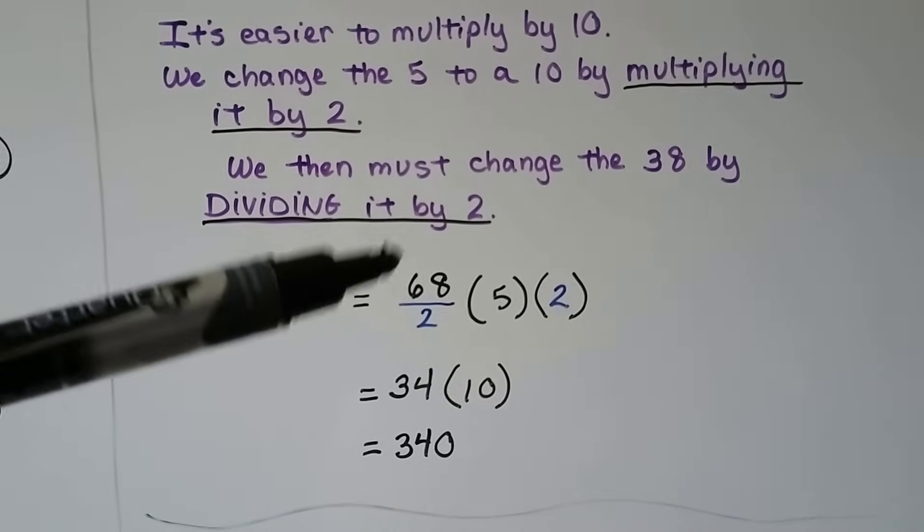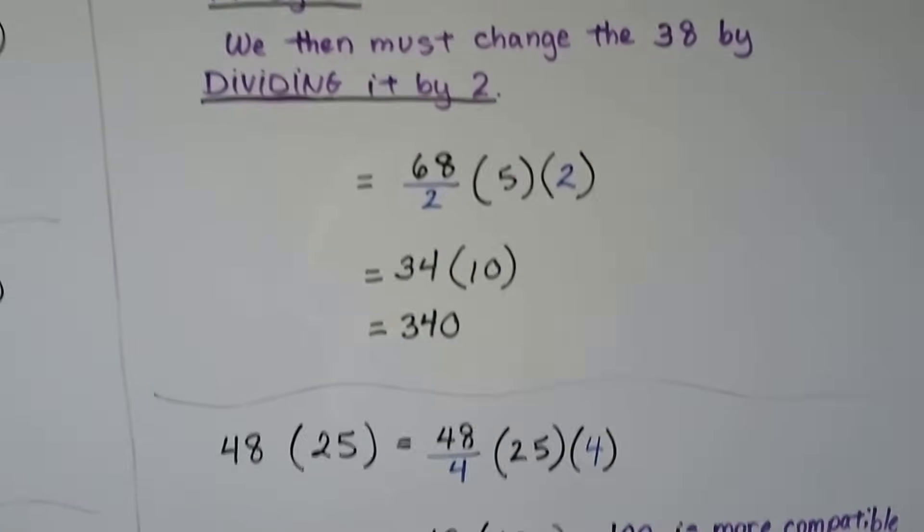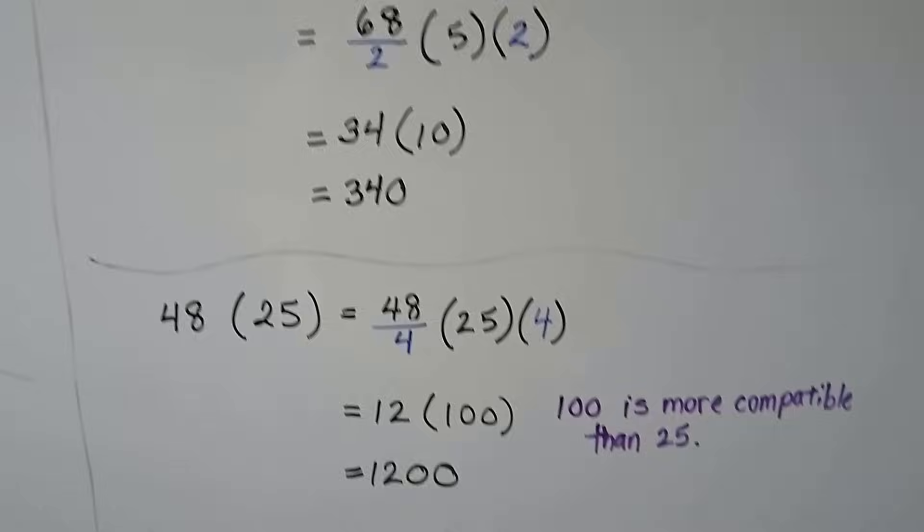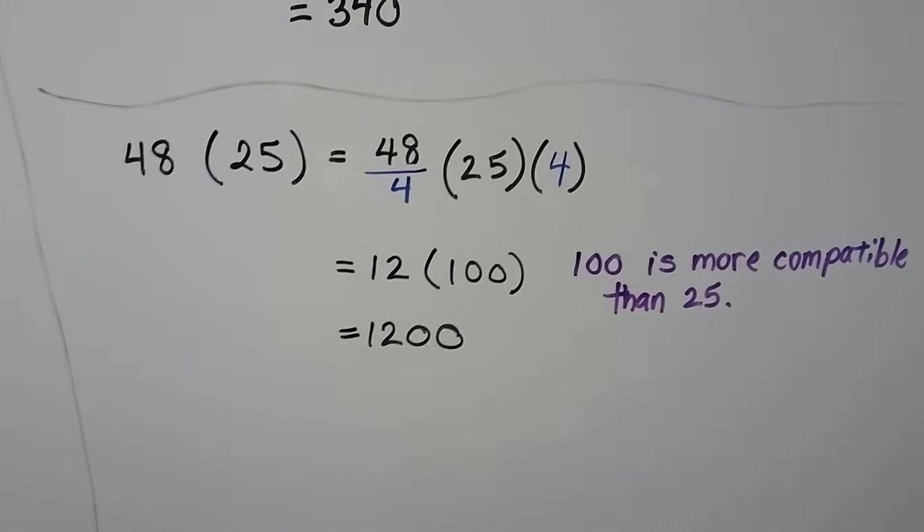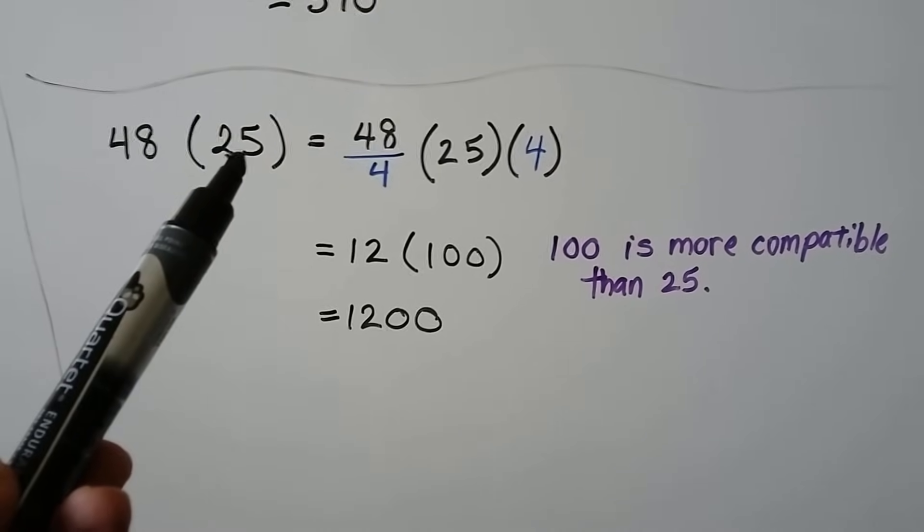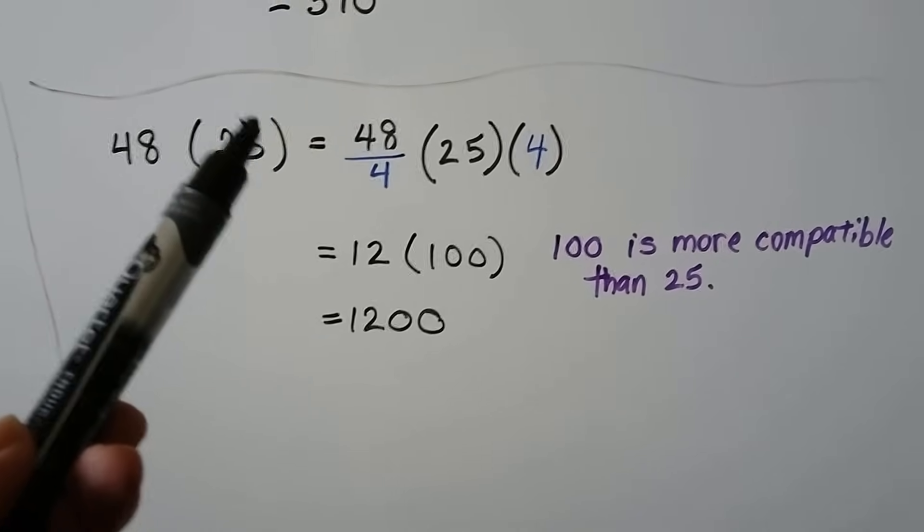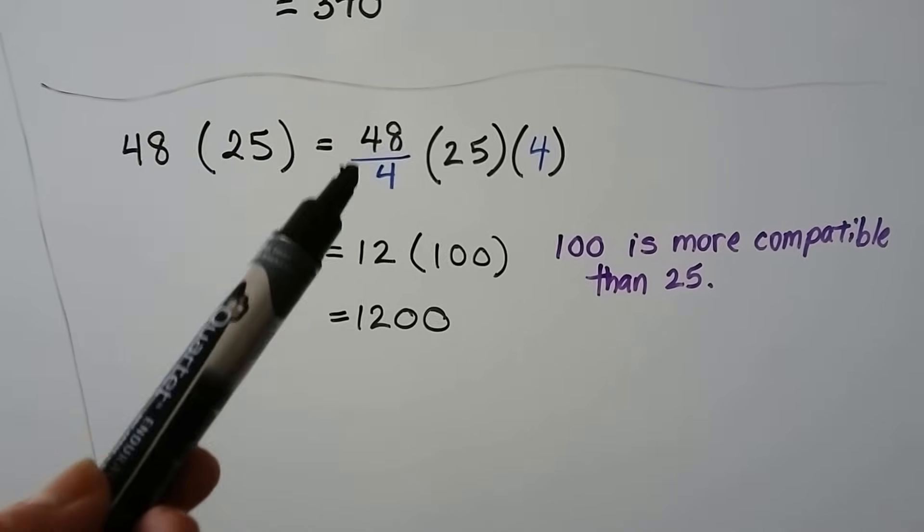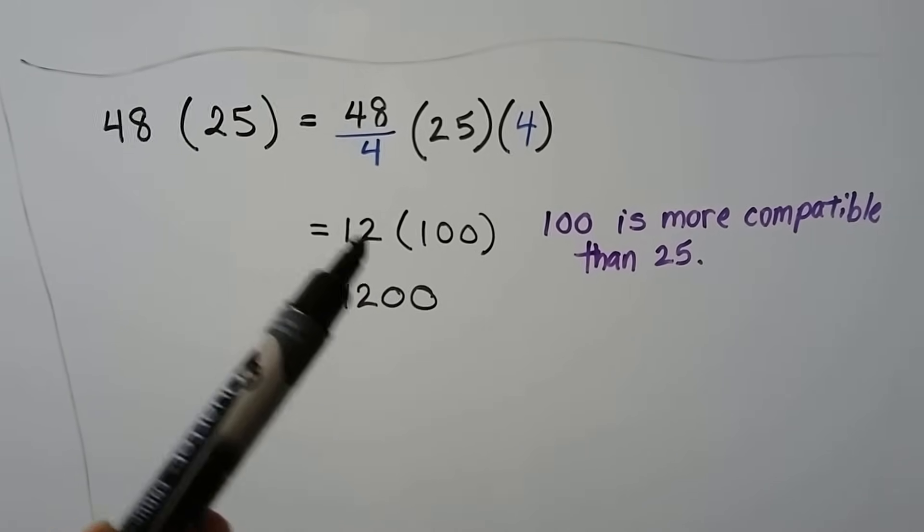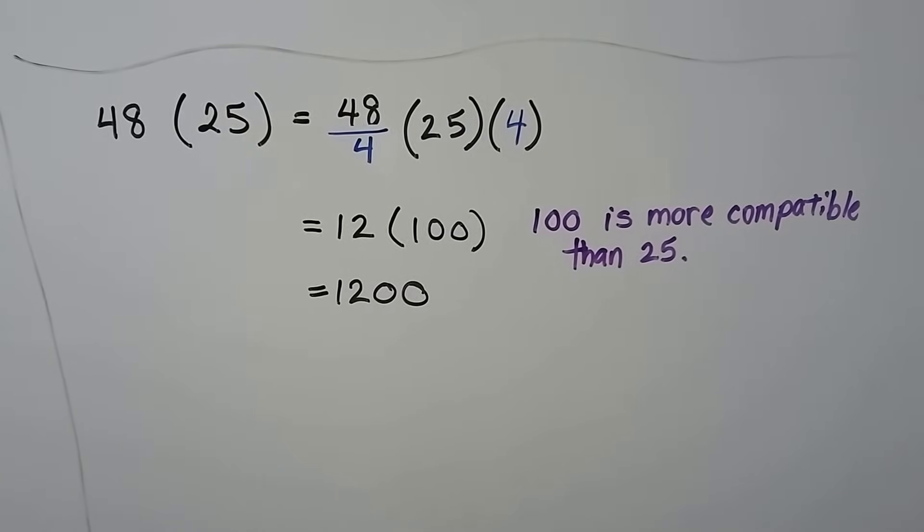It's easy to use for mental math, this method, when it's an even number and you can divide it by 2 very quickly, or if you're just trying to make that 5 into a 10 because it's easy to multiply by 10 or 100. Let's try one more. We have 48 times 25. It's a lot easier to multiply by 100 than it is by 25. We would have to multiply this by 4 to make it 100. That means we have to divide this by 4. So, 48 divided by 4 is 12. 25 times 4 is 100. Now we have 12 times 100. That's easy to do in our head. That's 1,200.